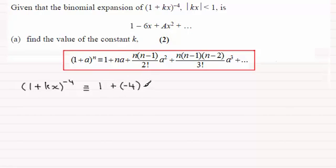And then we've got the next term here which is going to be plus n which is -4 and then it's multiplied by n-1 so we subtract 1 away from this to give us -5 and then this is all over factorial 2.